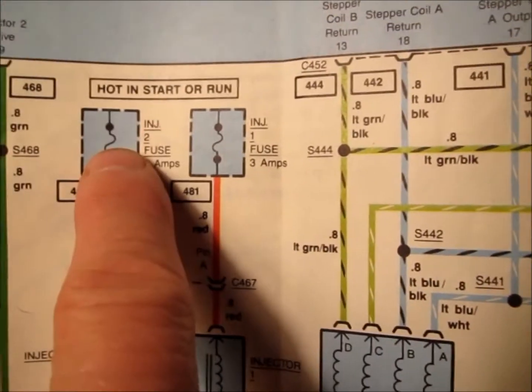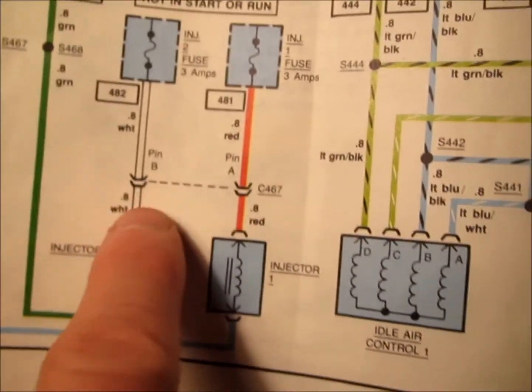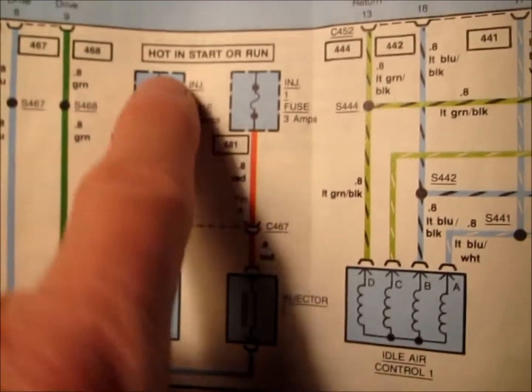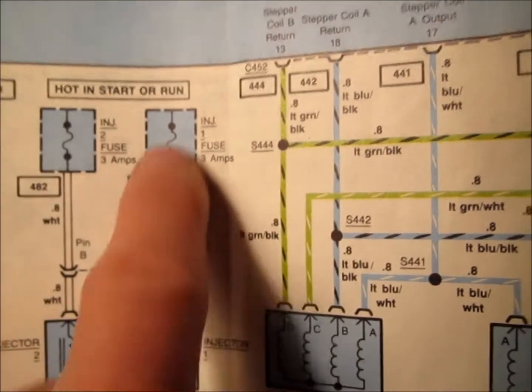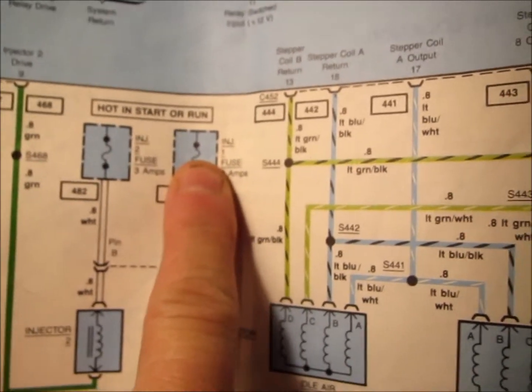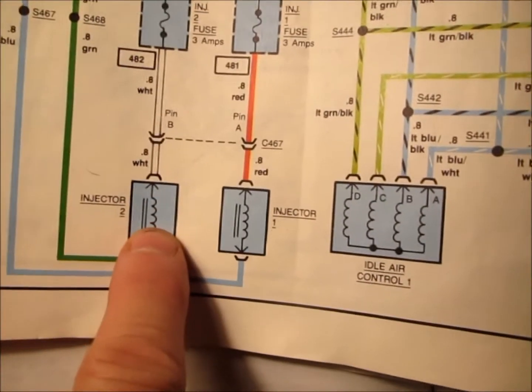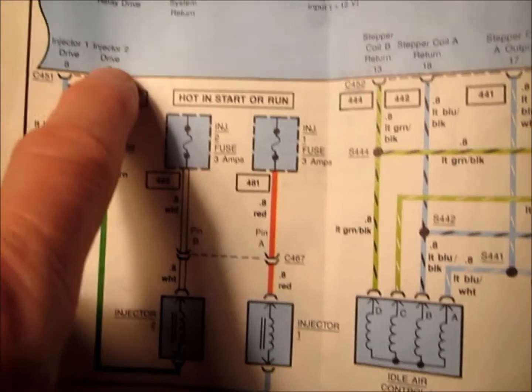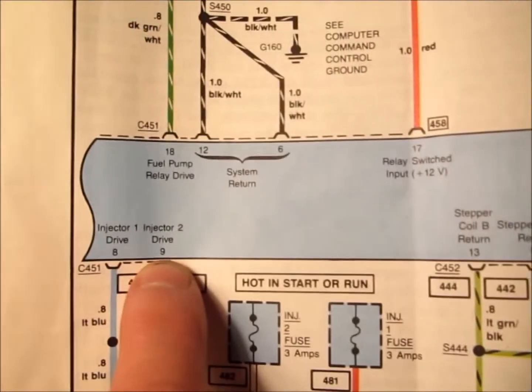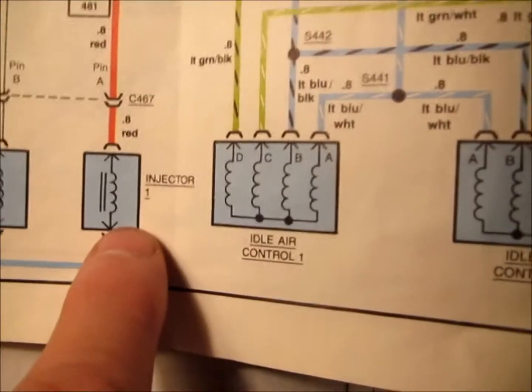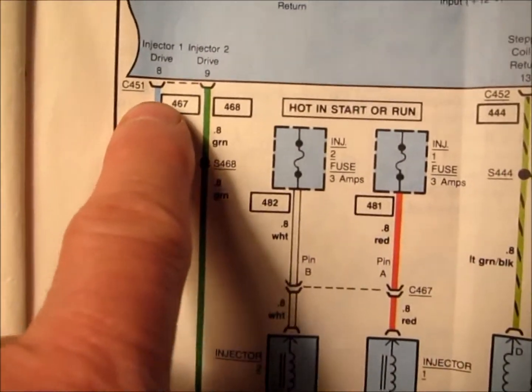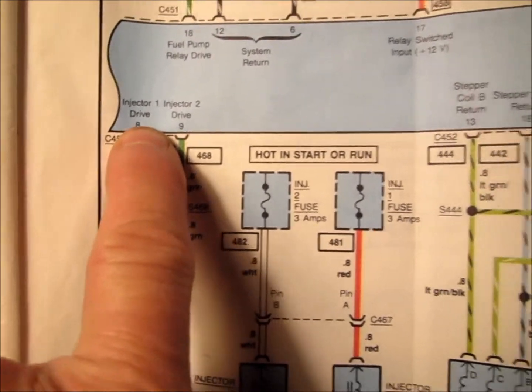On the fuel injectors, you have the two fuses. Off of injector number 2, you have a white wire that goes to fuse. Injector number 1 has a red wire that goes to fuse. Injector 2 will have a green wire that goes to pin number 9 on the electronic control module. Off injector number 1 you have a blue wire that goes to pin number 8, injector 1.